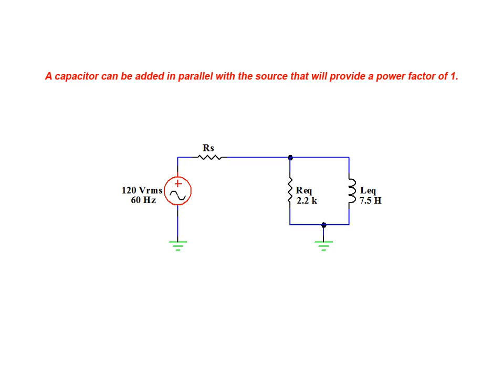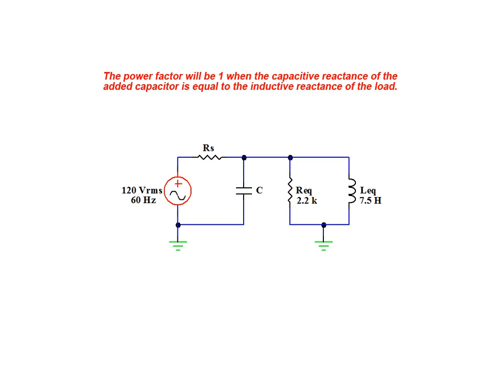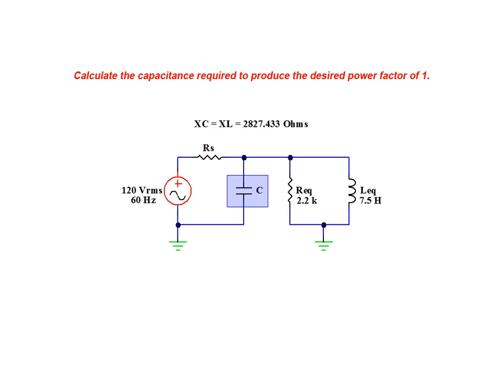A capacitor can be added in parallel with the source to provide a power factor of one. The power factor of the circuit will be equal to one when the capacitive reactance of the added capacitor is equal to the inductive reactance of the original load. To illustrate this fact, we calculate the capacitance required to produce the desired power factor of one by rearranging the basic relationship for calculating capacitive reactance to solve for capacitance. Solving the modified relationship, we arrive at a value of 938.159 nanofarads as the required capacitor value.